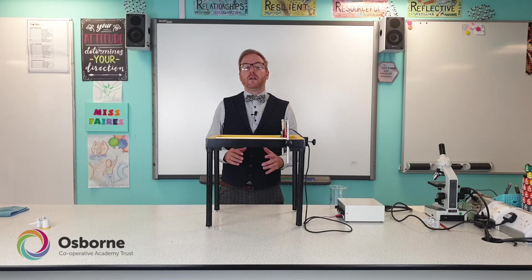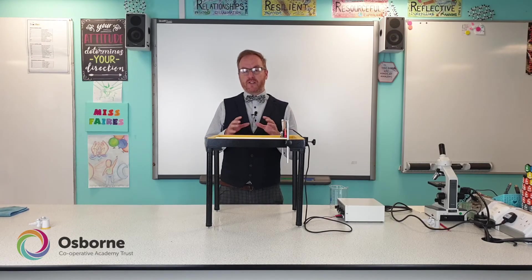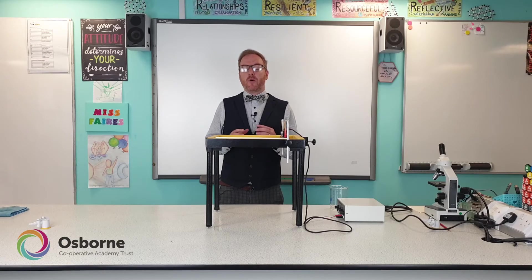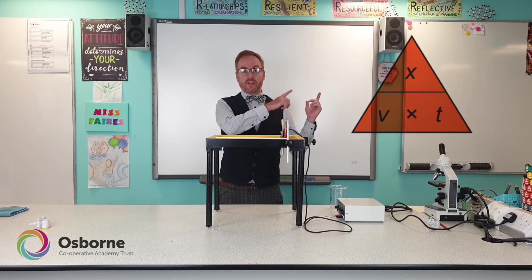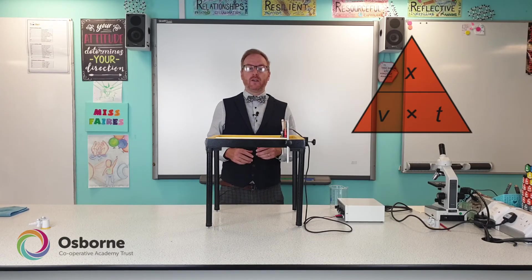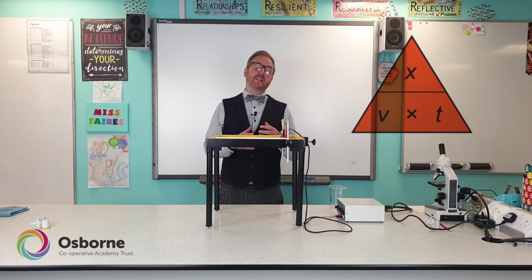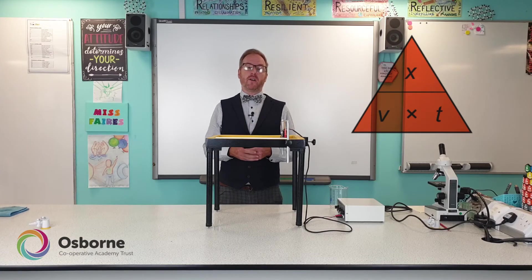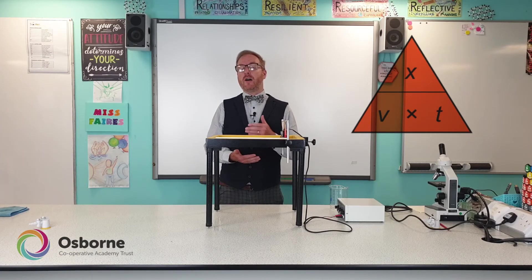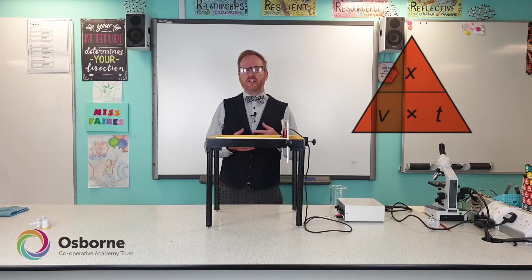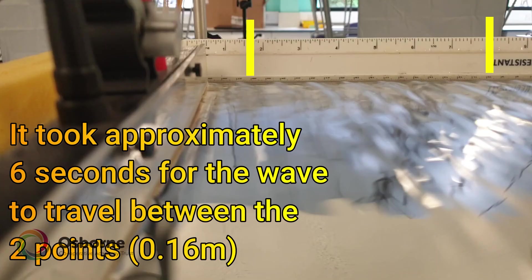We can now use some of the information we've gathered from our measurements taken from the ripple tank to calculate the speed of the wave. We're going to need this equation: distance divided by time. Our distance has to be in metres and our time has to be in seconds. Let's do that calculation on the screen now.